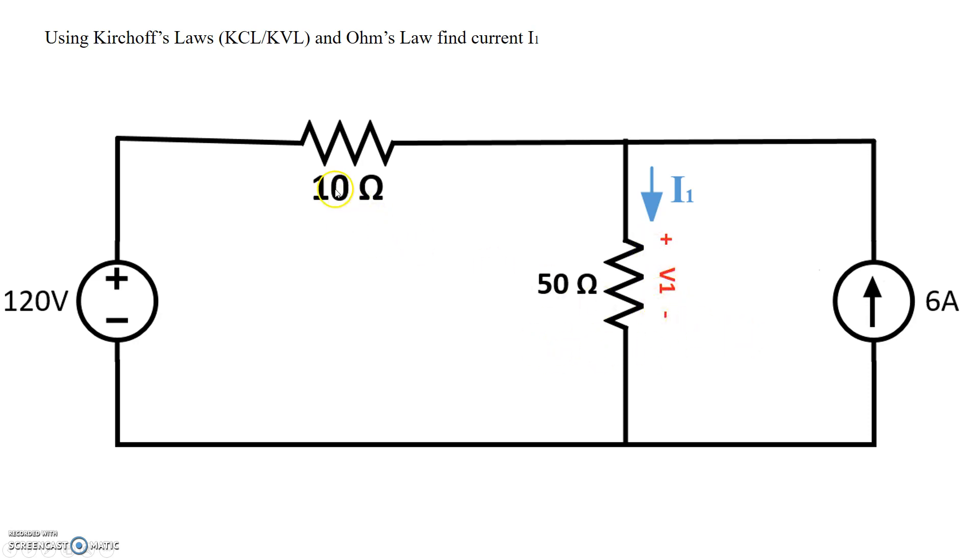For the 10 ohm resistor, let's write down plus minus V2, which means that this writing plus minus V2 basically says the current should be entering on the plus sign. So I2 enters on the plus sign. Now this 6 amp current is coming out of this current source, and it flows up this way and through right here. So let's add a 6 amp current right there.